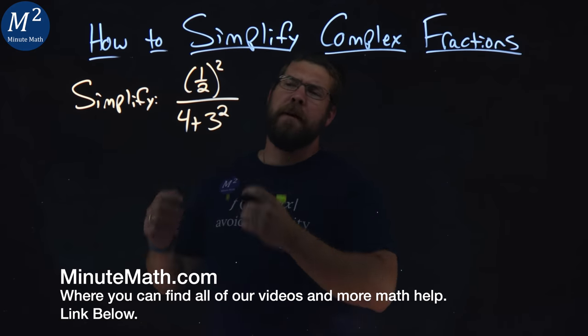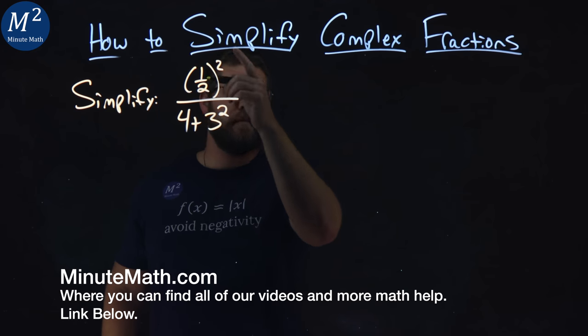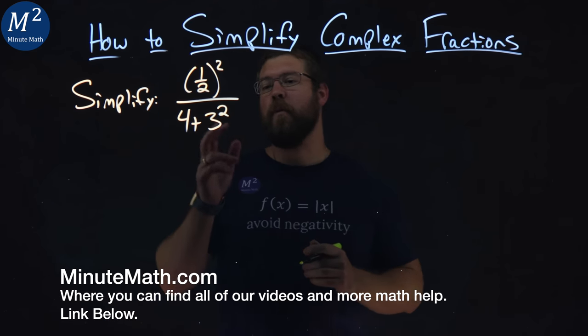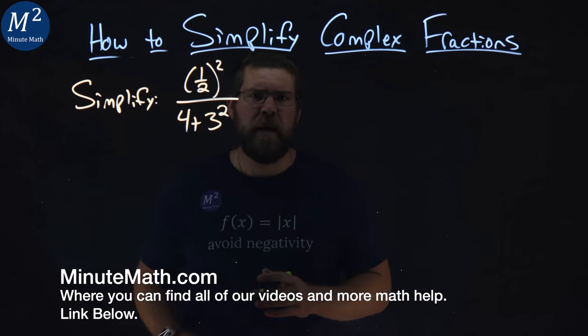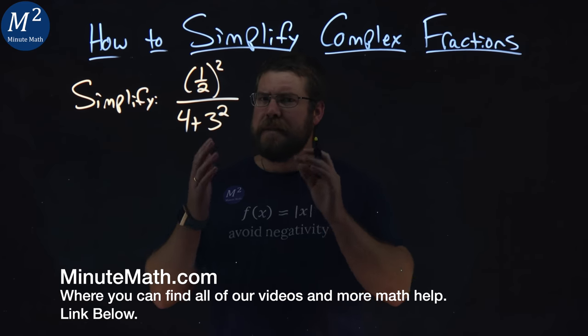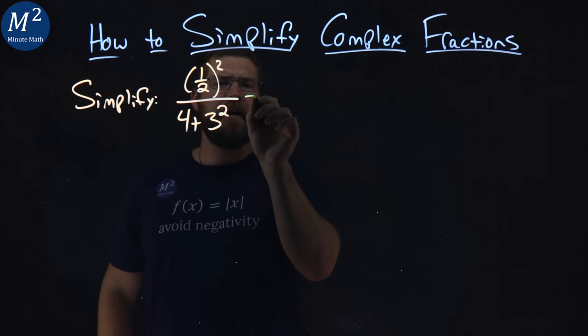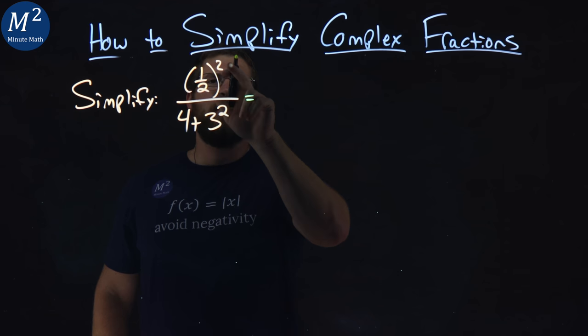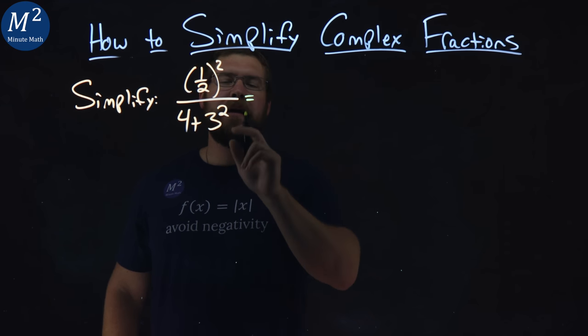We're given this problem right here. Simplify one half all squared, divided by four plus three squared. We have to use our order of operations here. Now, first thing I look at, I have a squared, an exponent, in the numerator and the denominator.